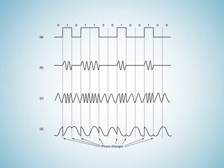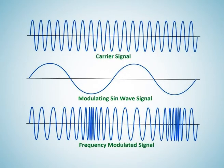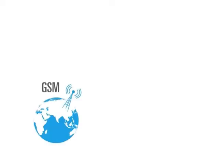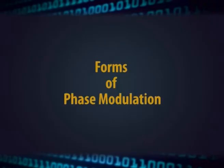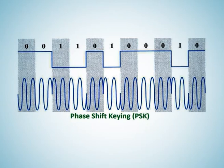Phase modulation (PM) is used in many applications to carry both analog and digital signals. Keeping the amplitude of the signal constant, the phase is varied to carry the required information. PM is used for transmitting waves and is an essential part of many digital transmission coding schemes underlying technologies like GSM, Wi-Fi, and satellite television. PM is far more widely used as a digital form of modulation, where it switches between different phases — this is known as phase shift keying (PSK) — and there are many types of PSK.